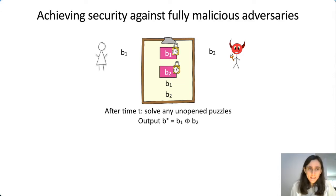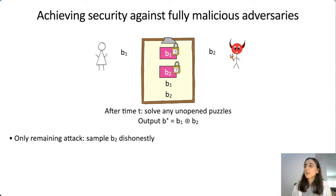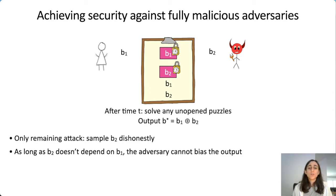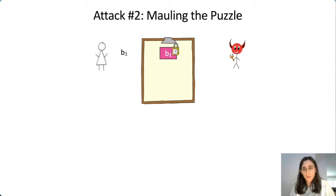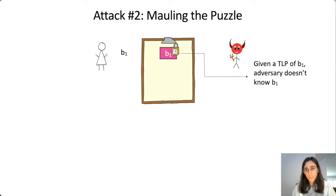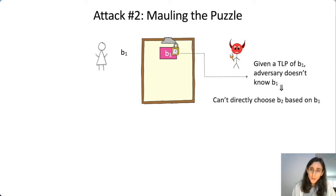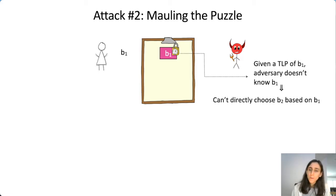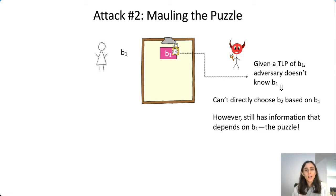So does this give us security against fully malicious adversaries? It does prevent the aborting problem. The leftover attack to think about is whether the adversary can pick B2 dishonestly. It's easy to see that as long as B2 doesn't depend on B1, then B1 will be uniformly random and independent. The adversary is given a puzzle for B1, but he doesn't know B1, so he can't directly choose B2 based on B1 as in earlier iterations. But he still has a puzzle—something that depends on B1—so it's possible he could use it to create a puzzle to a value correlated with B1.